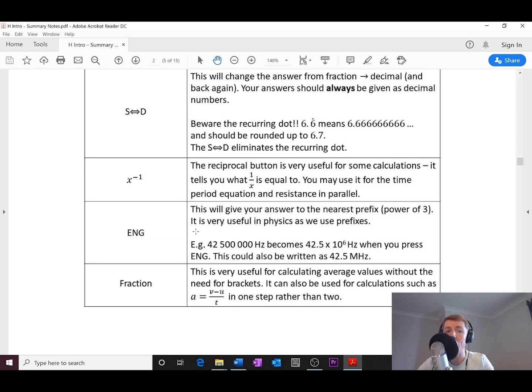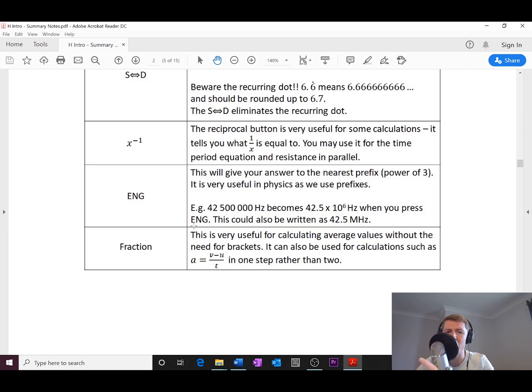The ENG button, remember this is sort of like your engineering button that can put numbers into powers of three for you, like what we use for prefixes. So for example, if you had an answer of 42,500,000 hertz output on your calculator and you wanted to write that down in scientific notation, then what you could do is just press the ENG button. This will give you this number here and a power of six. We would know that that is megahertz if you remember your prefixes, but you wouldn't need to write your answer in megahertz. You could just write down the number in scientific notation.